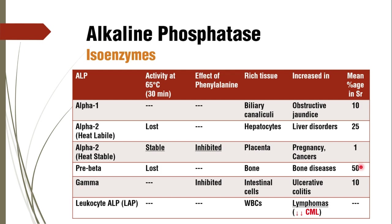Coming to the isoenzymes which are widely studied: alpha-1, alpha-2 heat labile, alpha-2 heat stable, pre-beta LP, gamma LP, and leukocyte LP. Alpha-1 is found in highest concentration in biliary canaliculi, and alpha-2 heat labile in hepatocytes. So the liver-specific isoenzyme is alpha-2 heat labile, while in biliary canaliculi the highest concentration is alpha-1. Studying alpha-1 versus alpha-2 heat labile can delineate disorders of biliary canaliculi from hepatocytes — alpha-1 is 10% and alpha-2 heat labile is 25% of mean serum percentage.